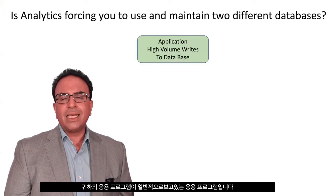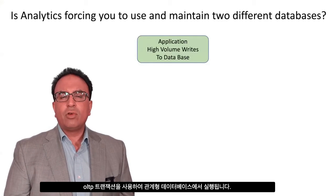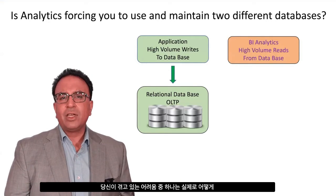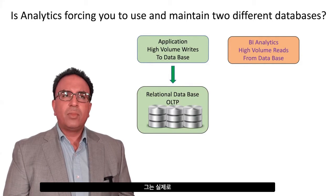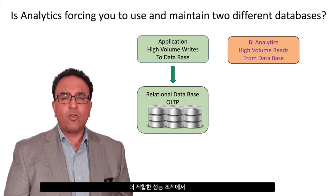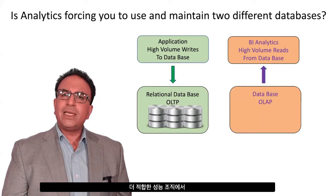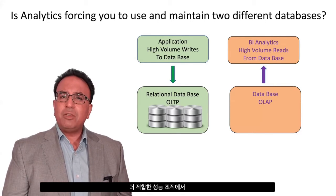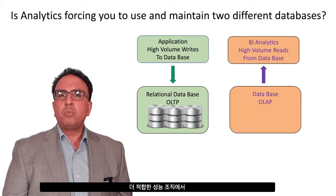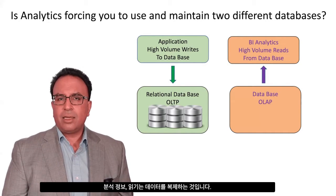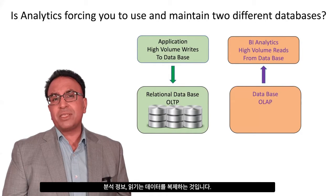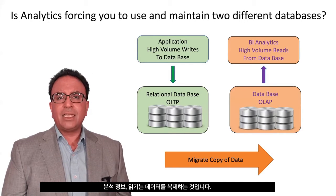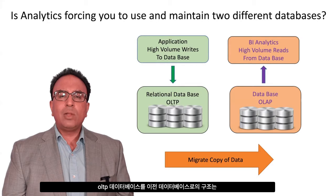Typically, what I've been seeing is if you've got an application that runs on a relational database using OLTP transactions, then one of the challenges you have is how do you actually get your analytics information out of that database, because it can actually hinder performance. So what I see most organizations doing is setting up a second database for BI analytics, tending to use OLAP, which is more suited for analytics. And when you do set up a second database, what typically I see customers doing is replicating the data from the OLTP database into the OLAP database.